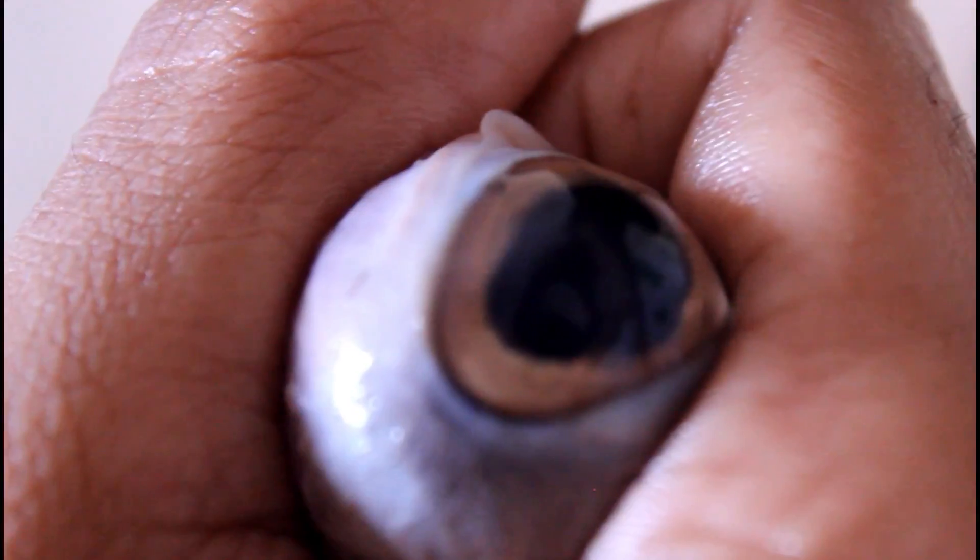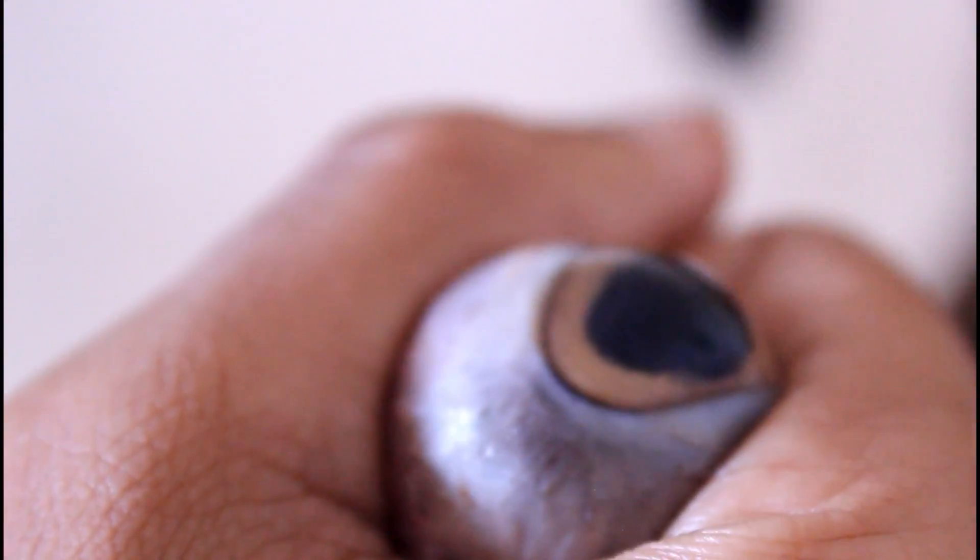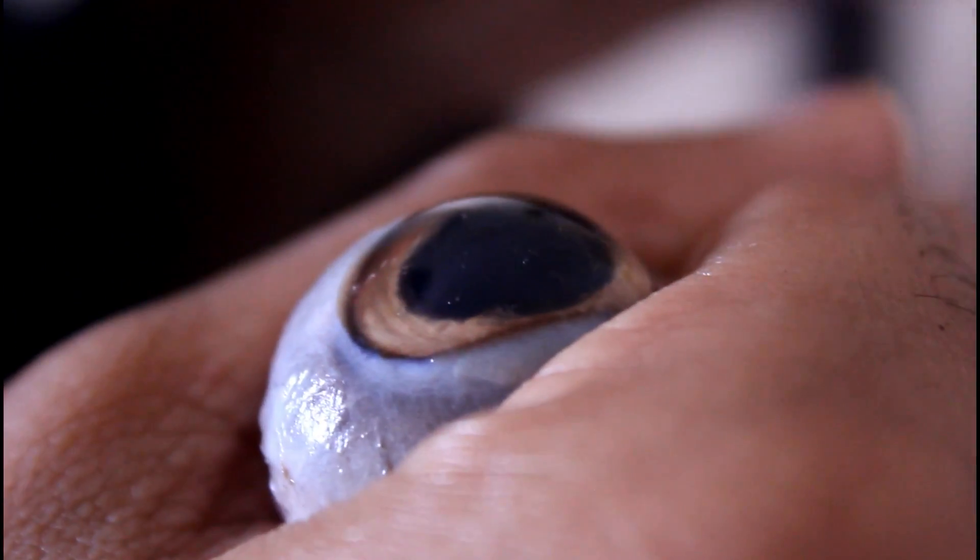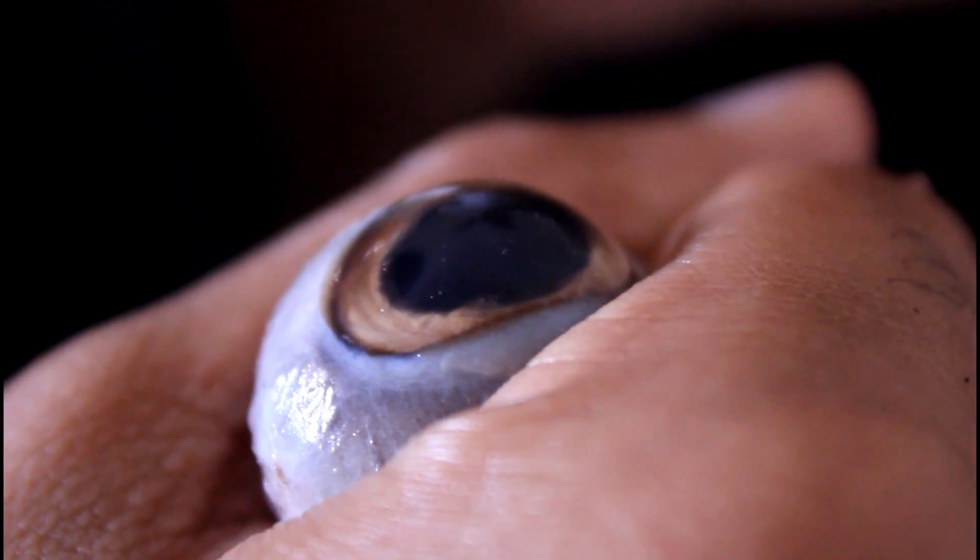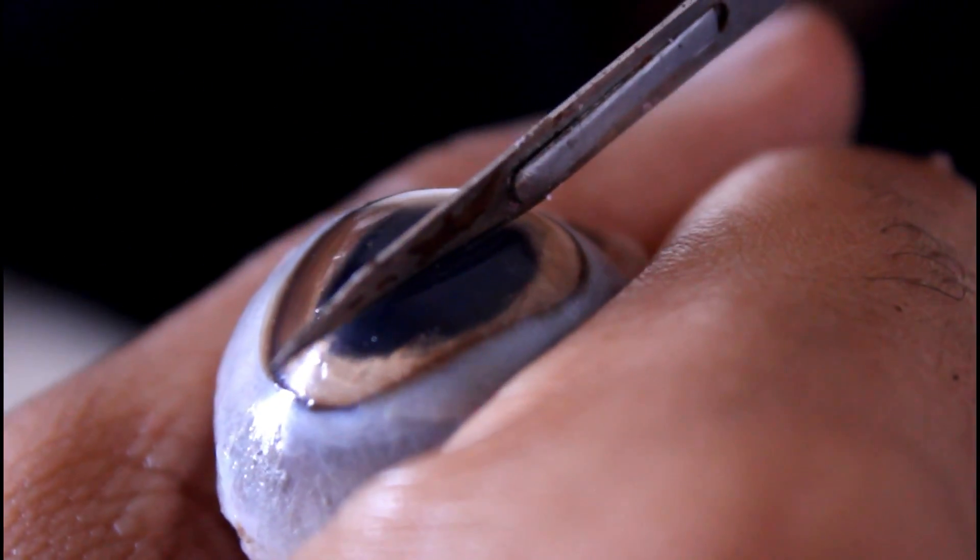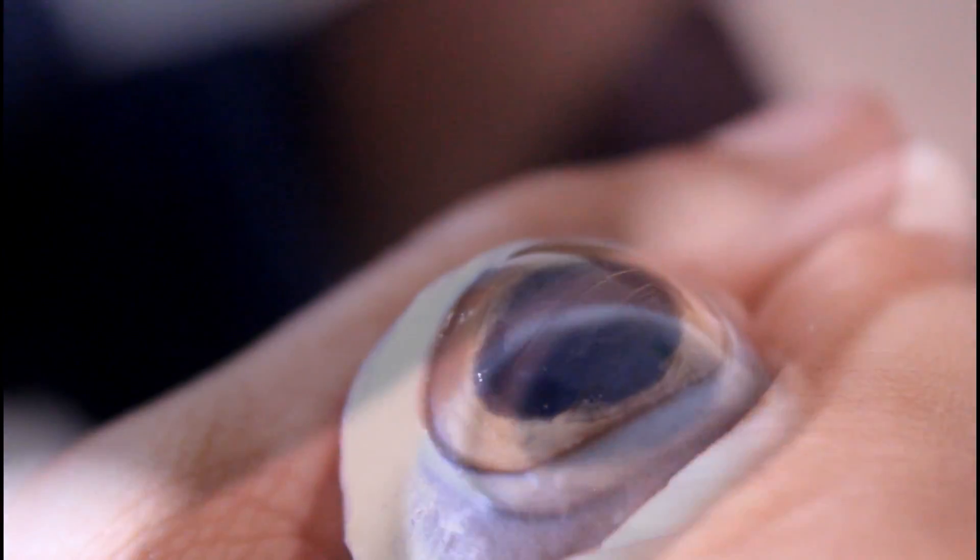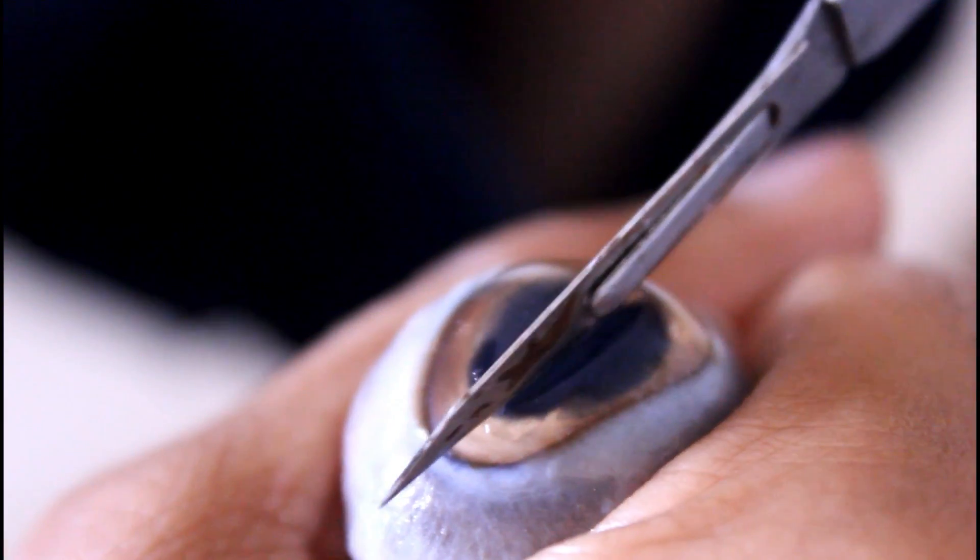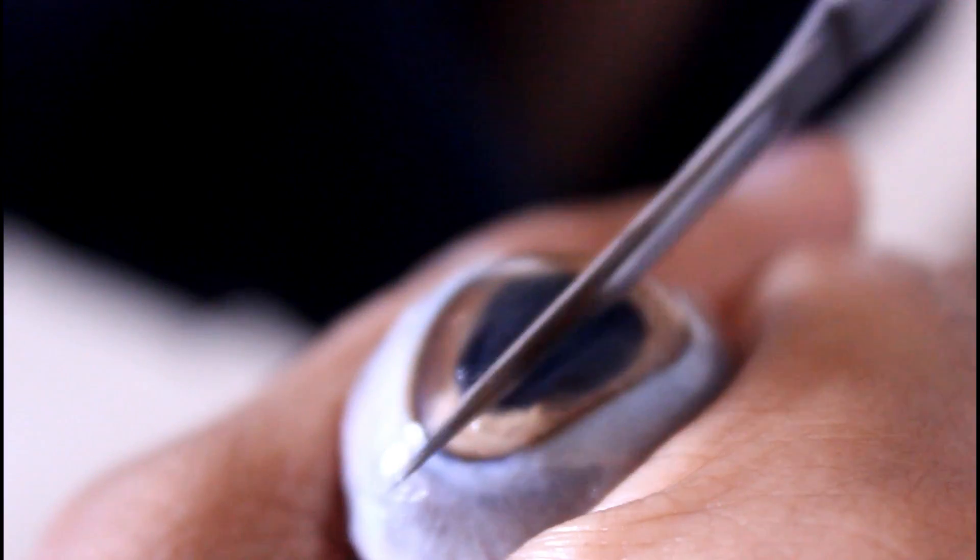Here I am with this goat's eye. It can be considered as a human eye because they are quite similar. The muscles are quite strong - even with this sharp knife, it's not that easy to cut.